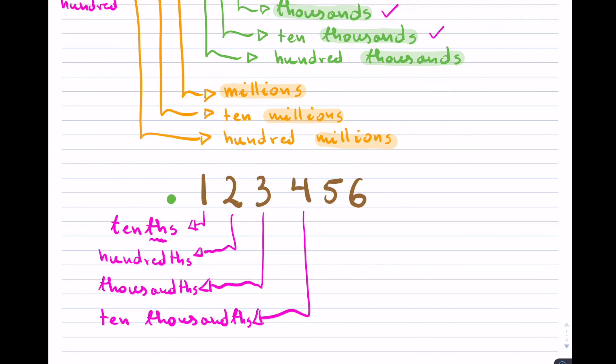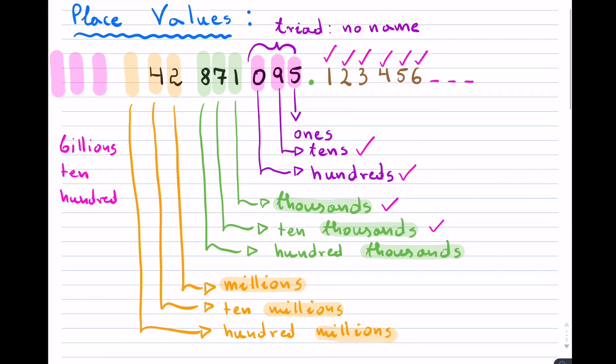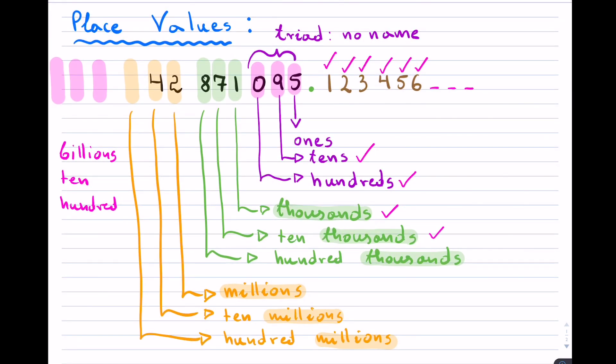So these place values are useful to know because sometimes we use them. Someone might say round the number to the hundredths, and if you don't know what that is, then that is problematic. So this is just a short overview of place values for decimal numbers. I hope you found this useful.